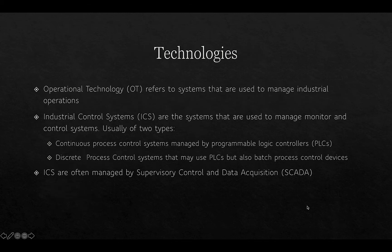Operational technology refers to systems used to manage industrial operations. Industrial control systems (ICS) are used to manage, monitor, and control systems in industry. They are usually of two types: continuous process control systems managed by programmable logic controllers (PLCs), and discrete process control systems that may use PLCs but also use batch process control devices. ICS are often managed by supervisory control and data acquisition, or SCADA.